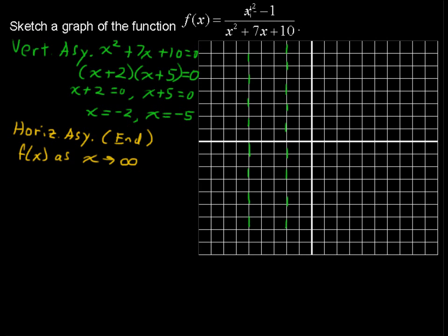If you plug in a very large number you get infinity divided by infinity multiplied by these leading coefficients. In this case we have coefficients of 1, so our horizontal asymptote is just the ratio of those leading coefficients, which is 1. So we have a horizontal asymptote of y equals 1.